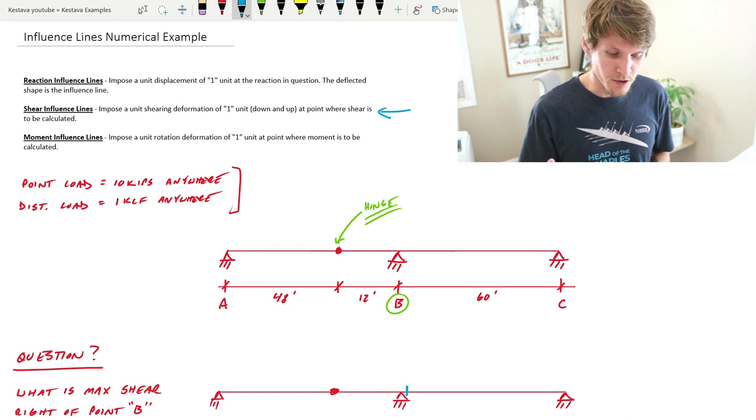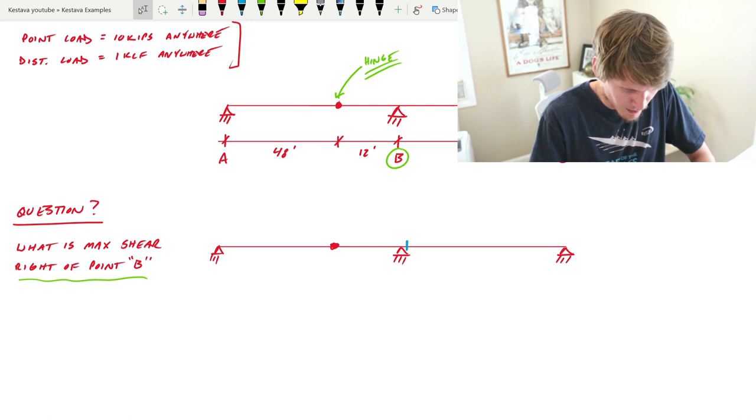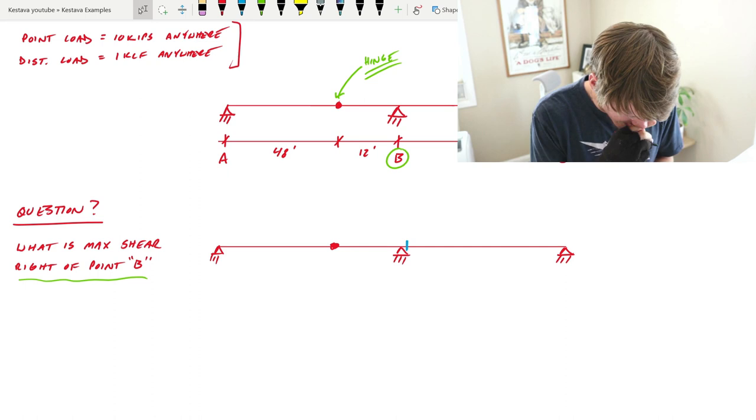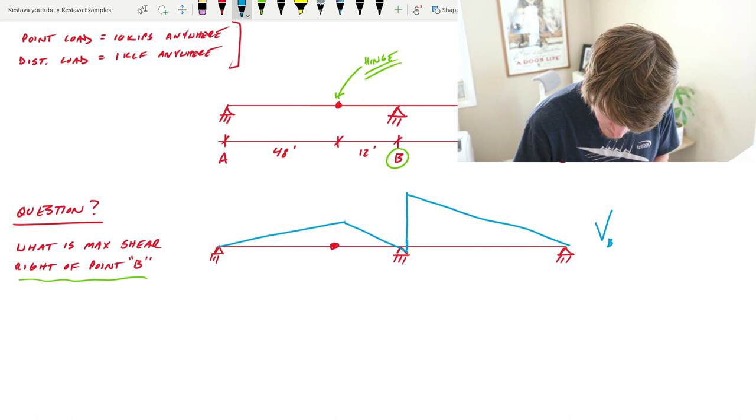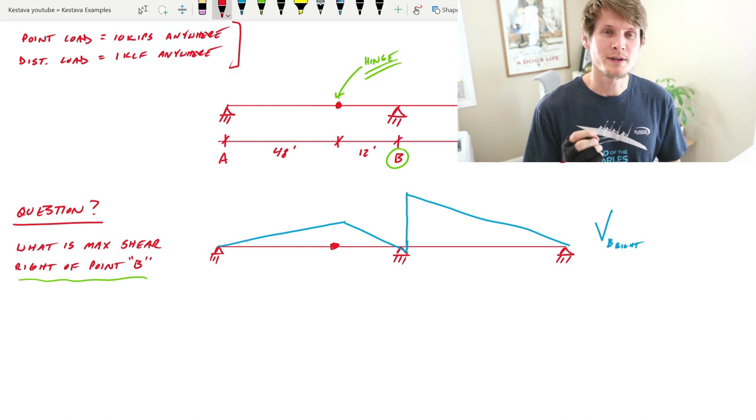This is the rule we're going to be using today: impose a unit shear deformation of one unit down and up at the point where shear is to be calculated. We're cutting that open with our bread knife, and we're going to get an influence line that looks something like this. This is V sub B right.